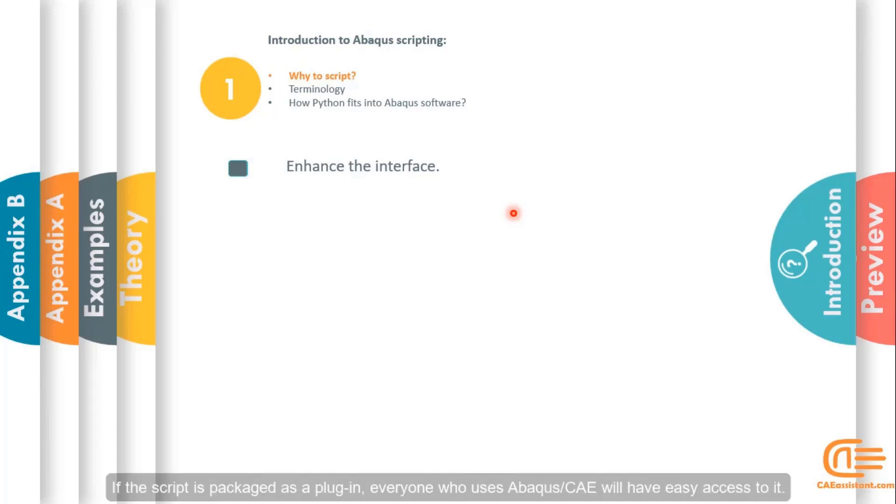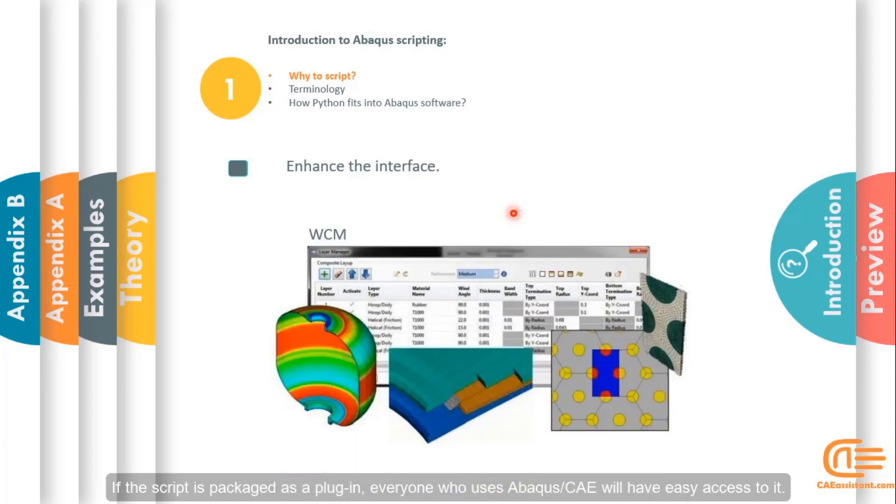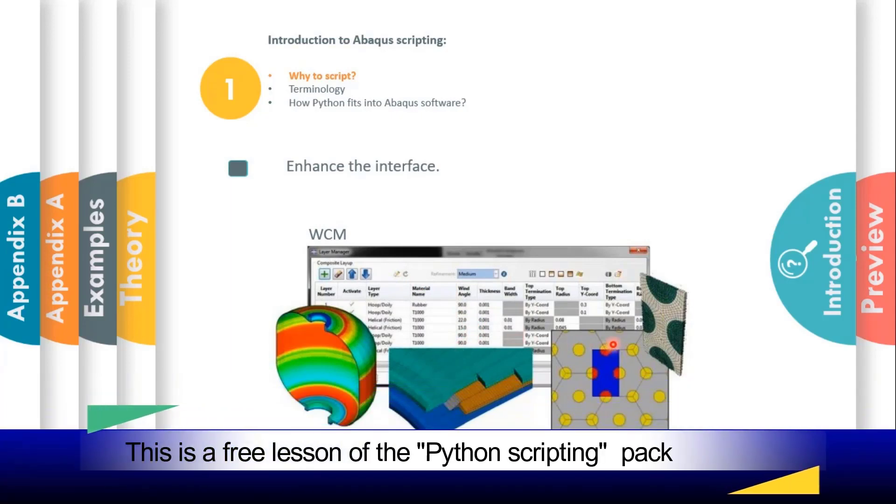If the script is packaged as a plugin, everyone who uses Abacus CAE will have easy access to it. For example, the below picture represents a plugin for designing composite tanks.